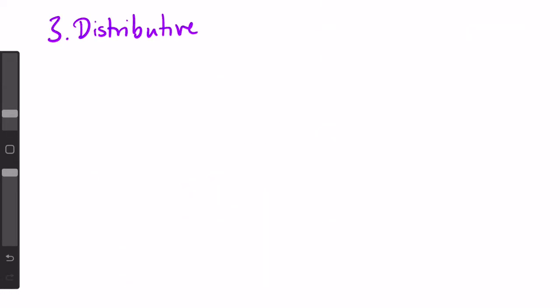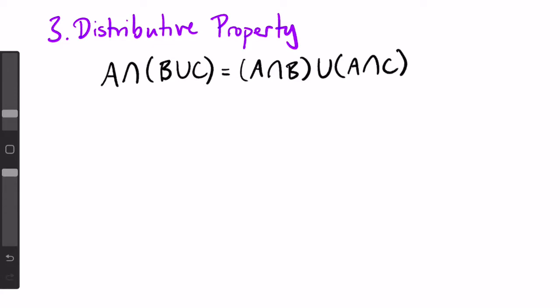The third property is the distributive property which states that A intersect (B union C) equals (A intersect B) union (A intersect C). And the other way around. Again, it works exactly like it does in regular algebra.